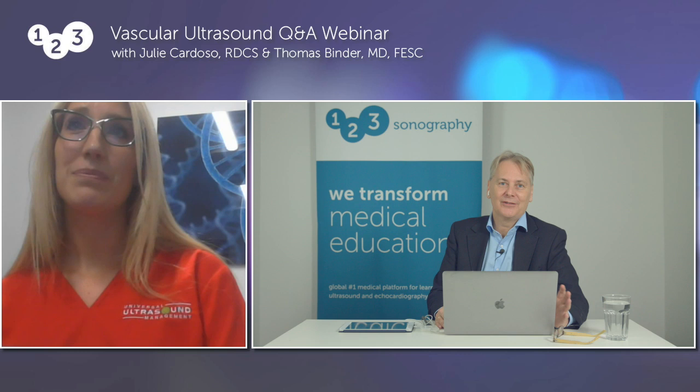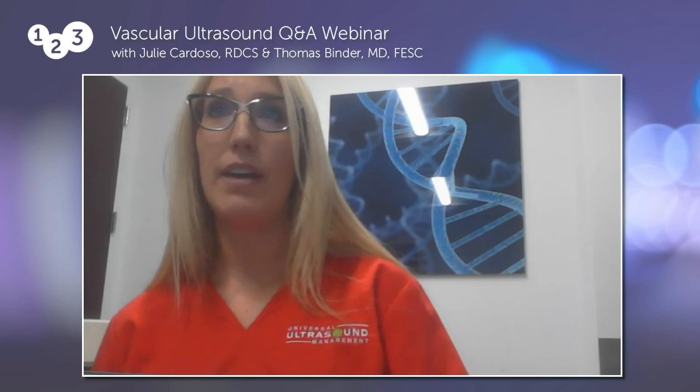Are there certain patients where you immediately know they'll be difficult to image? Patients with advanced arterial disease who have gangrenous wounds, patients with advanced venous disease, heavy edema, and skin changes — the skin often becomes very hard and dry. With advanced arterial disease, I immediately want to use a curvilinear transducer, elevate and bend the knee, maybe put a paper towel underneath to increase hydrostatic pressure so I can image those vessels.